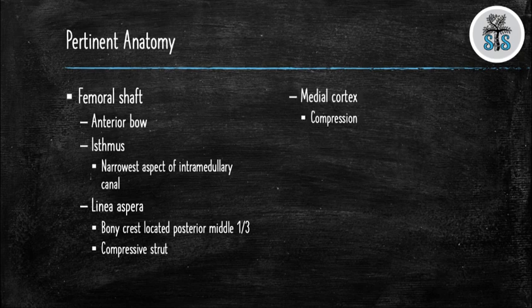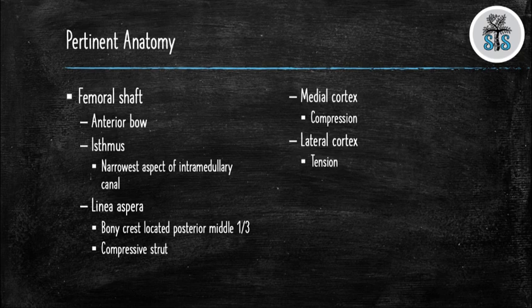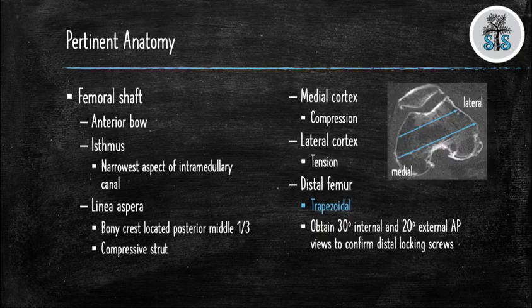The medial aspect of the femoral shaft is under compressive forces, whereas the lateral aspect is under tensile forces. The distal femur is trapezoidal in shape — the axial CT scan demonstrates how the anterior aspect is narrower than the posterior aspect. This is important because when placing your screws, you must confirm their length by obtaining a 30-degree internal rotation view and a 20-degree external rotation view to confirm the screws are not protruding too far out of the bone.